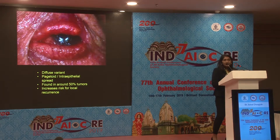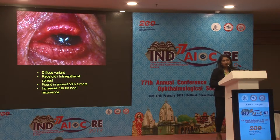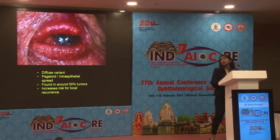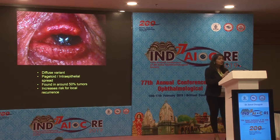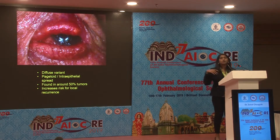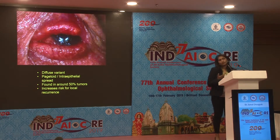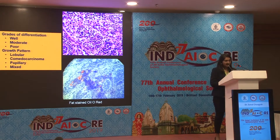The other variant, apart from nodular, is the diffuse variant, also called pagetoid sebaceous gland carcinoma, happening because of the intraepithelial spread of malignant cells, which is found in around 50% of sebaceous gland tumors. It can be nodular, pagetoid, or a combined nodular with the rest of the tarsus involved in pagetoid spread as well. Pagetoid spread in turn increases the risk of local recurrence for sebaceous gland carcinoma.